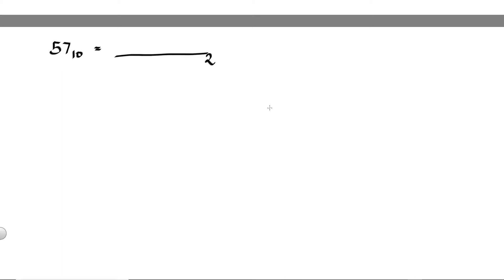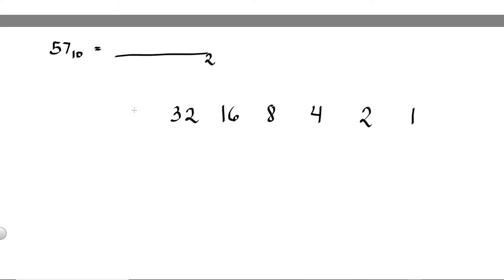First, we are going to write the power of 2 table, or the binary table, starting from right to left. So we have: 2 raised to 0 is equal to 1, 2 raised to 1 is equal to 2, 2 raised to 2 is equal to 4, 2 raised to 3 is equal to 8, 2 raised to 4 is equal to 16, 2 raised to 5 is equal to 32, and 2 raised to 6 is equal to 64. But we don't need 64 because 64 already exceeds 57.